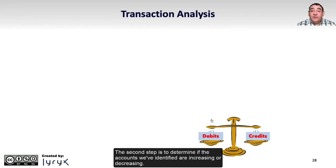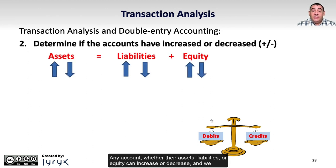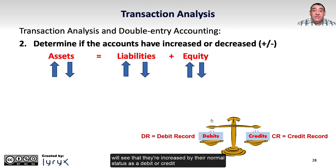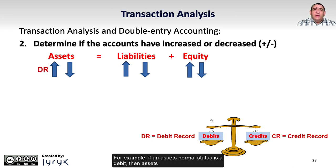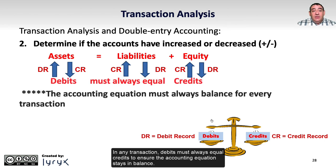The second step is to determine if the accounts we've identified are increasing or decreasing. Any account — whether assets, liabilities, or equity — can increase or decrease, and they are increased by their normal status as a debit or credit, and decreased by the opposite. For example, if an asset's normal status is a debit, then assets will always increase with debits and decrease with credits. For liabilities and equity, their normal status is a credit, so they will increase with credits and decrease with debits. In any transaction, debits must always equal credits to ensure the accounting equation stays in balance.